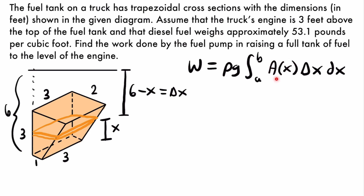Now let's focus on the cross-sectional area of our slice of fuel. Notice that it is a rectangular cross-section. Even though the tank has trapezoidal cross-sections, that refers to the cross-sections from side to side. The cross-sections of the tank from the bottom up are all rectangles. So the cross-sectional area of those slices of fuel will be equal to the length times the width.